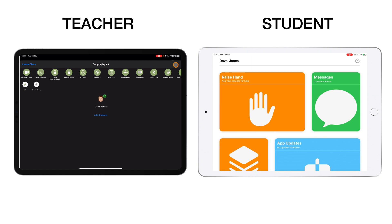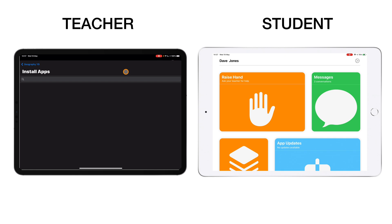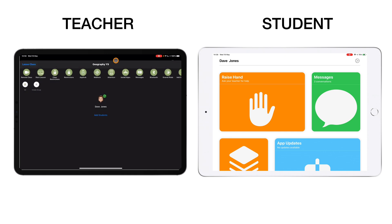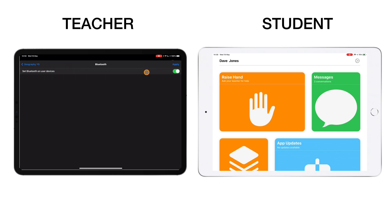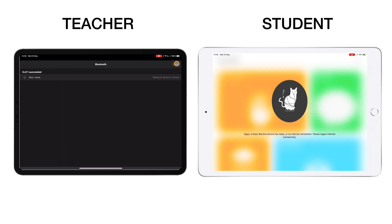I'll clear that and the student can come out of the restricted page. For installing apps: if there are apps I want to quickly push to the student device, as long as they've already been cleared through the Jamf instance I can find them here and push them out instantly — not necessarily something done on the fly, but it's possible. We've covered messages before. Bluetooth can be managed to ensure it's on for student devices for things like AirDrop.